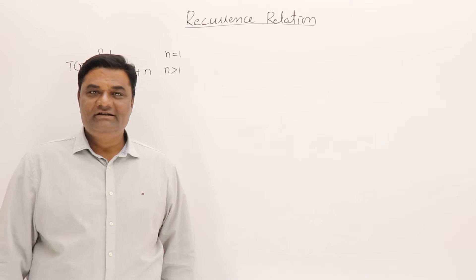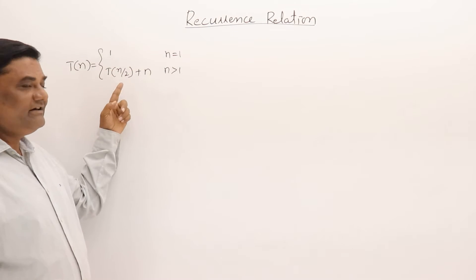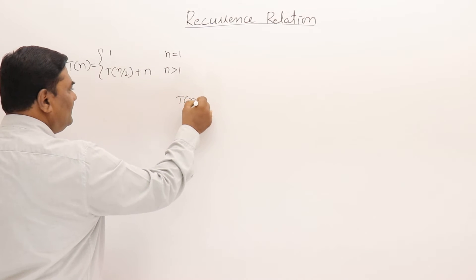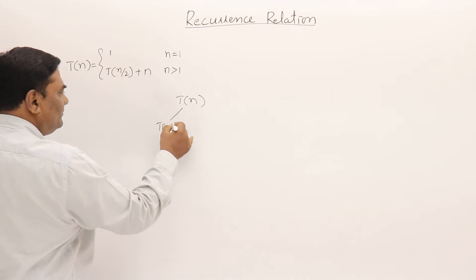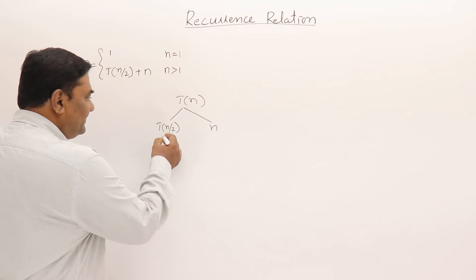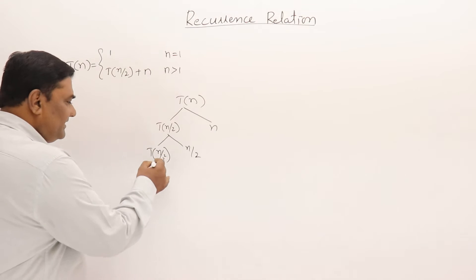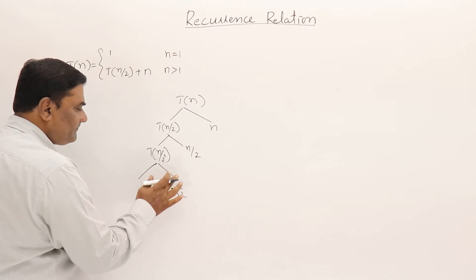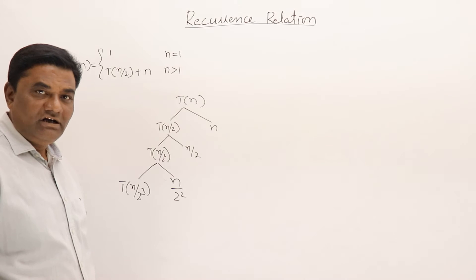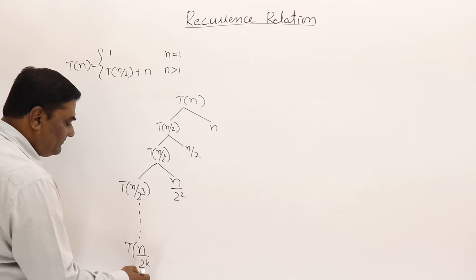One more recurrence relation to solve — I have not written any algorithm directly, I have taken a recurrence relation. This is a dividing function: T(n) = T(n/2) + n. I'll solve this using the recursion tree method. There are two steps: T(n/2) and n — the time taken at each step. Then T(n/2) takes n/2 time, T(n/4) takes n/4 time, and so on. I'll keep reducing for k times, repeating until n/2^k.